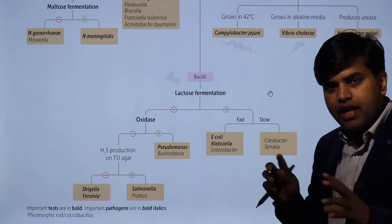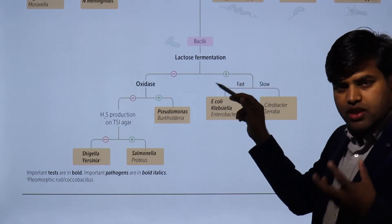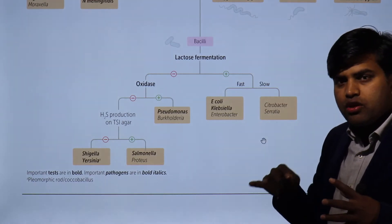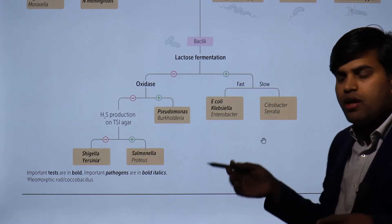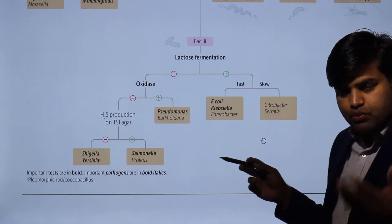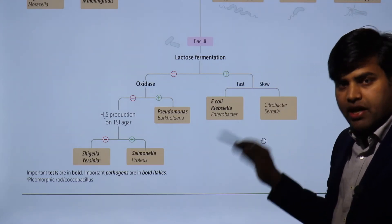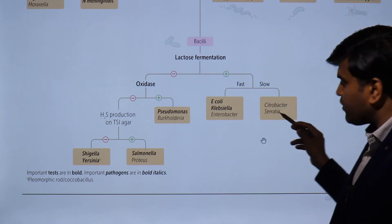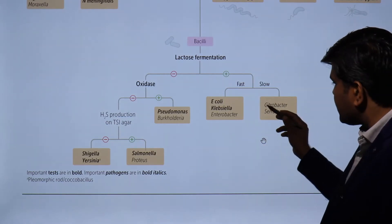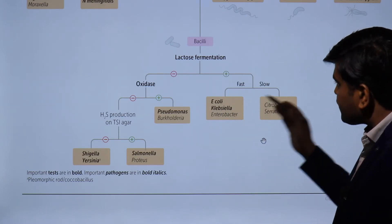The true bacilli group is very important and can be divided on the basis of lactose fermentation. Lactose fermenters produce acid, which changes the pH of the media, detected by an indicator causing a pink color. Organisms appearing pink on MacConkey agar after 16–18 hours of incubation are lactose fermenters: E. coli, Klebsiella, Enterobacter, Citrobacter, and Serratia — remembered by the formula CECK: Citrobacter, Enterobacter, Serratia, E. coli, and Klebsiella.